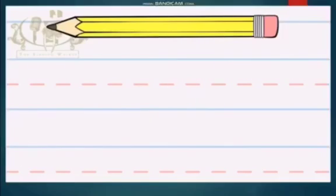First we'll write the capital Z. That's the big Z. Start at the top and make a line across to the right. Next, make a line down to the left. Now make one more line across to the right.